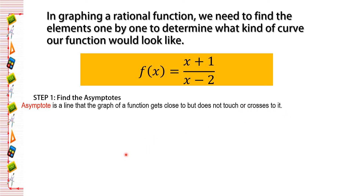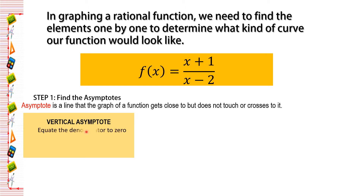We have two kinds of asymptotes. Let's first discuss the vertical asymptote. In finding the vertical asymptote, all we need to do is to equate the denominator to 0. The denominator of the given function is x minus 2. So we set x minus 2 equals 0 and solve for x. We transfer negative 2 to the other side and get x equals 2. This is our vertical asymptote, with point (2, 0).